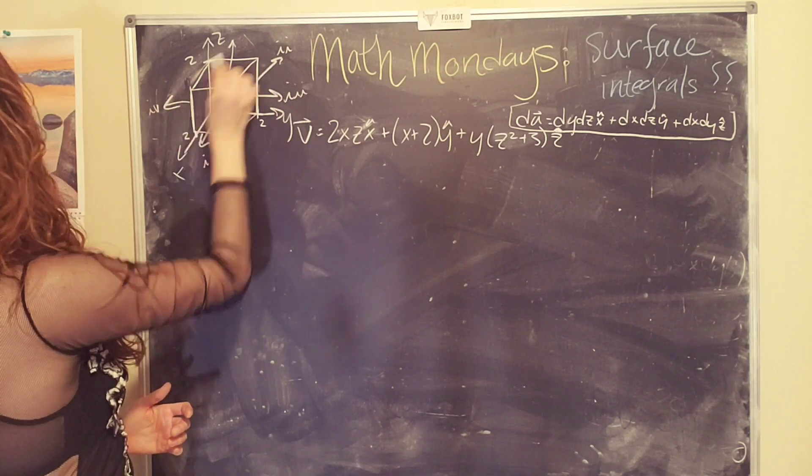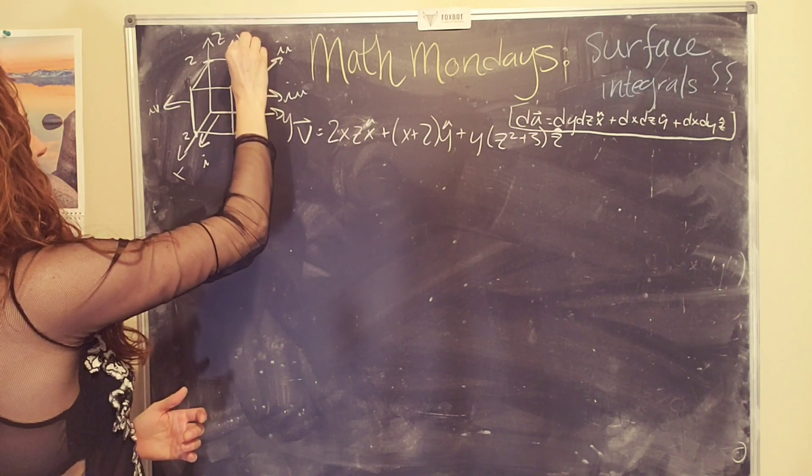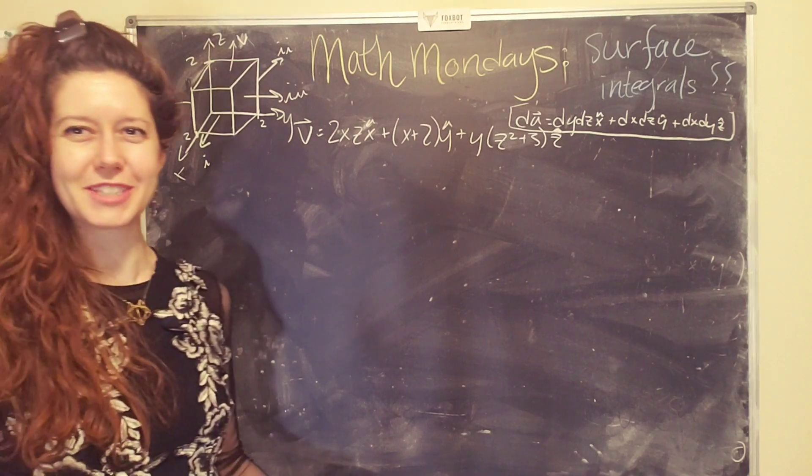And we'll label this one number three, this one number four, and this one number, uh, whoops. Oh my gosh. Okay. What letter am I doing? That's a five in Roman numerals, tiny Roman numerals. Okay.